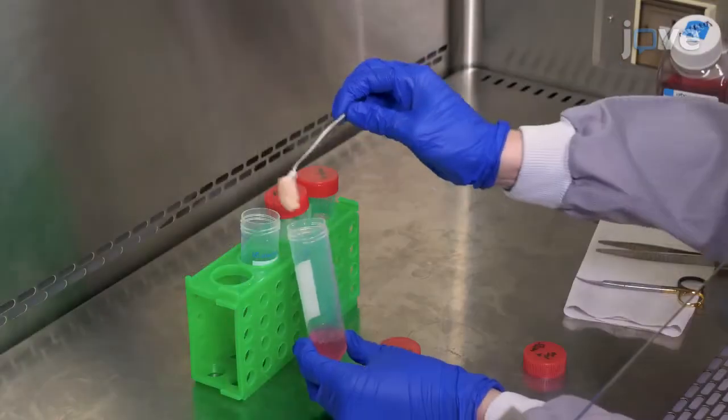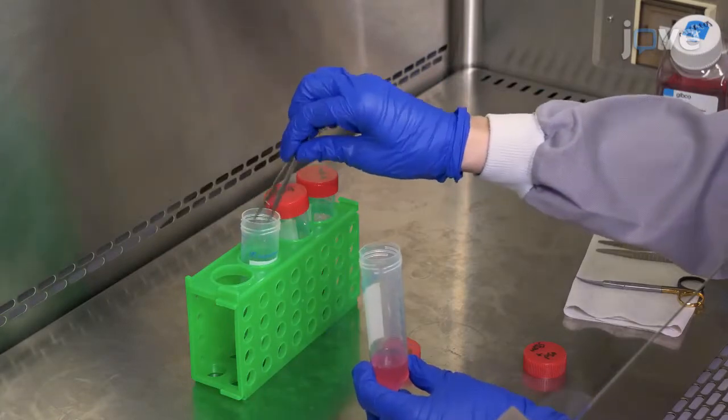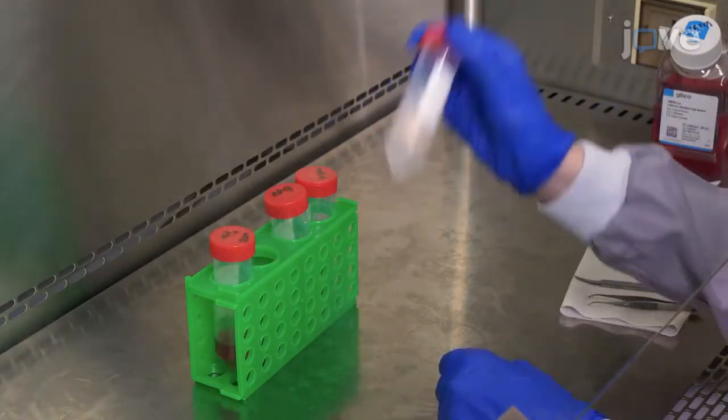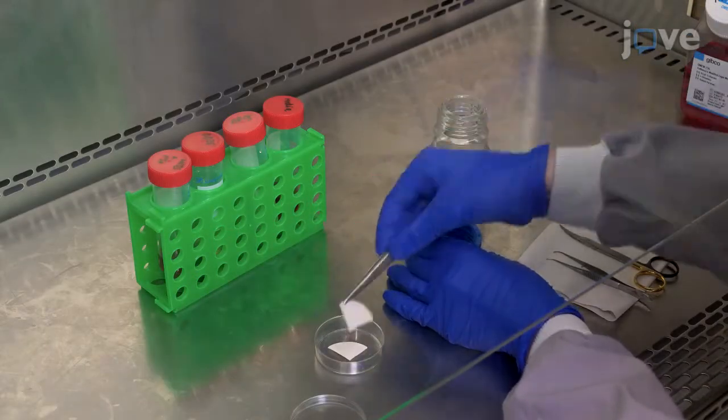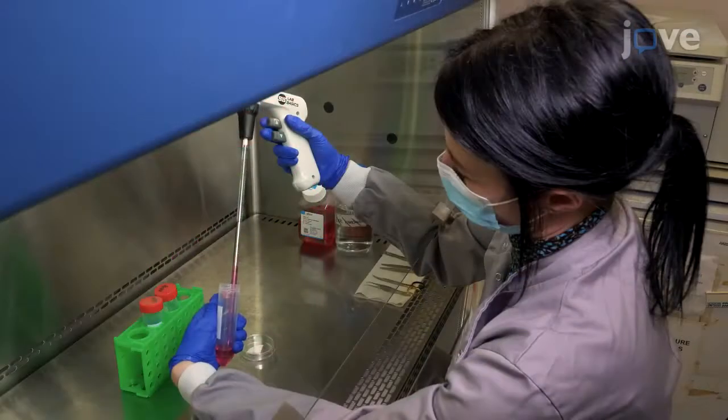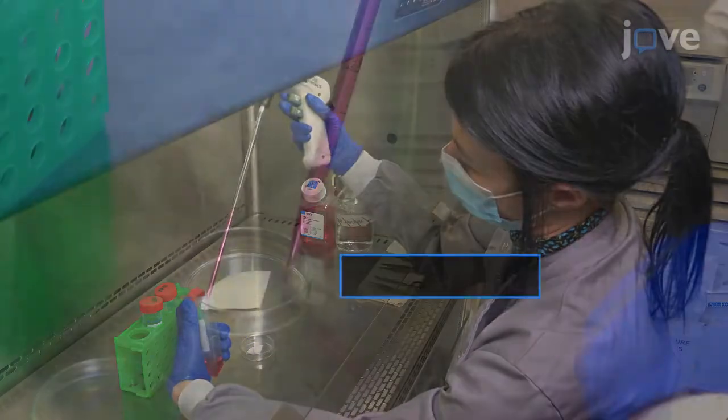After 10 minutes, rinse the skin in 25 milliliters of DPBS. After another 10 minutes, repeat the HBSS rinse without antibiotics and then perform a final rinse in 25 milliliters of DPBS.